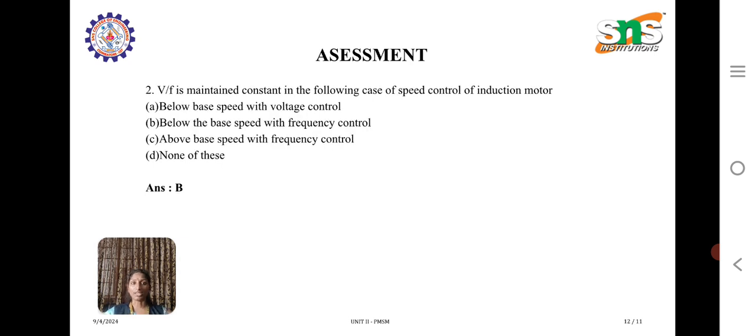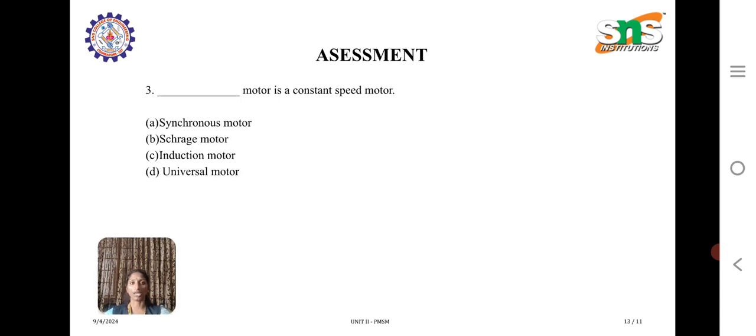V by F is maintained constant in the following case of speed control of induction motor: below base speed, below base speed with frequency control, above base speed with frequency control, or none of these. The answer is below base speed with frequency control. This V by F technique can be used.